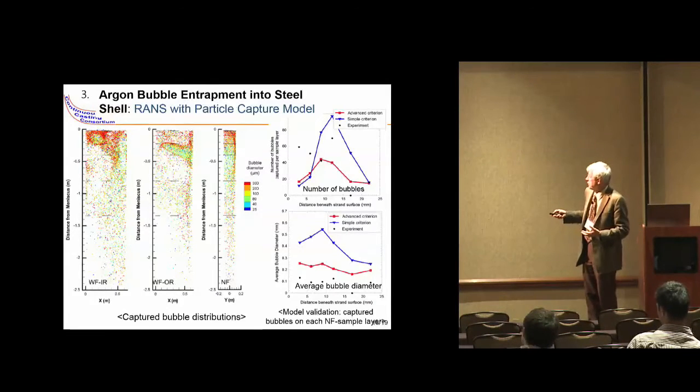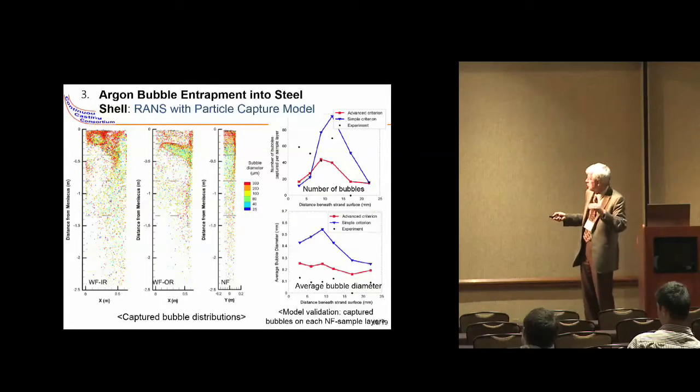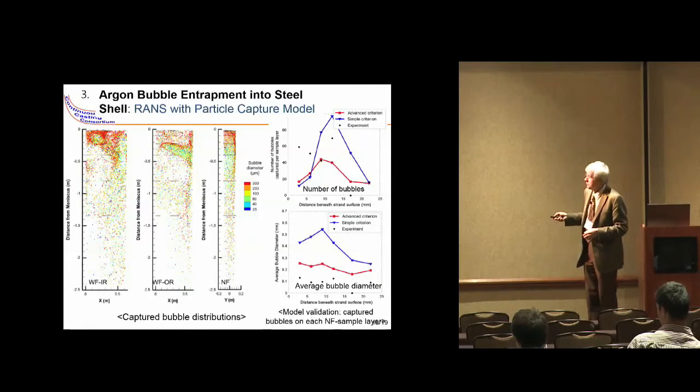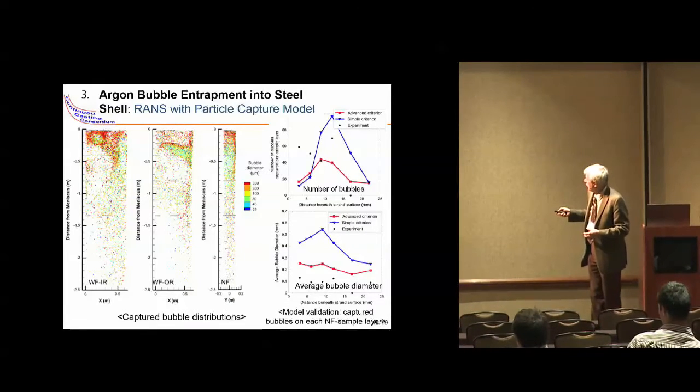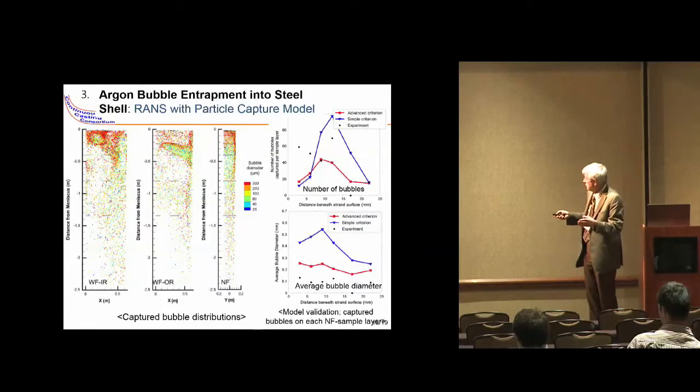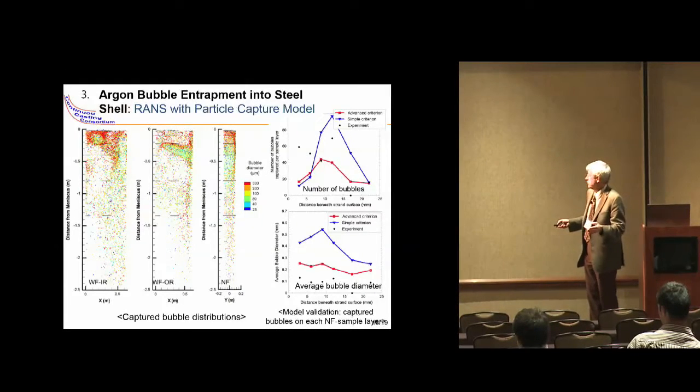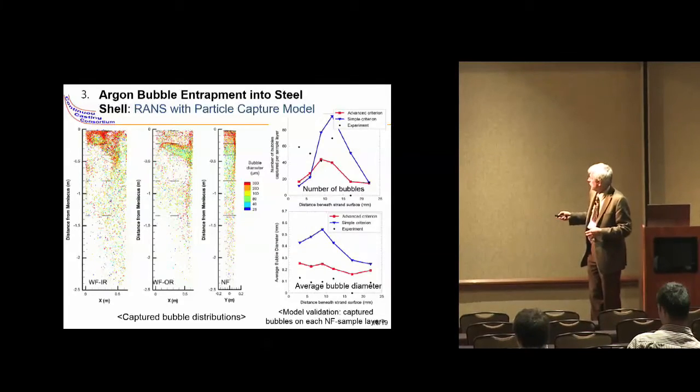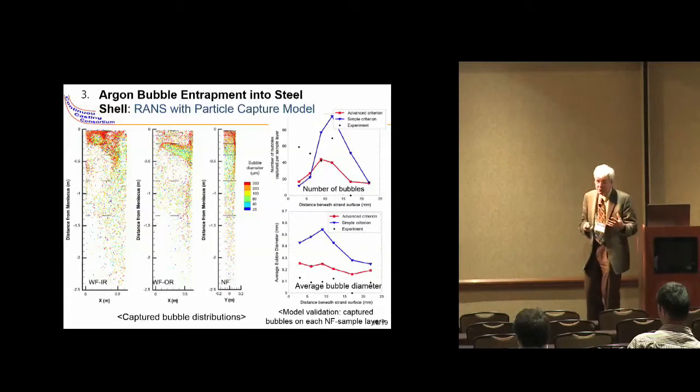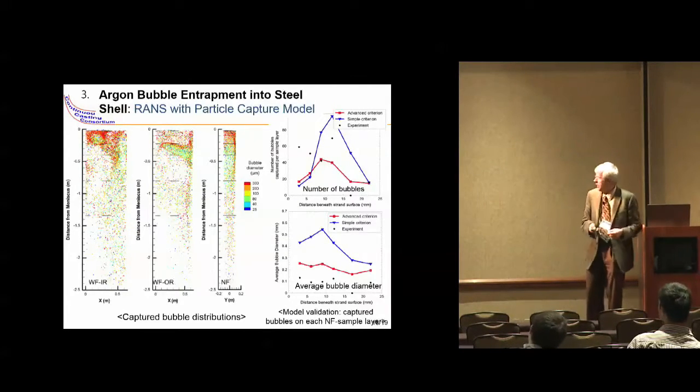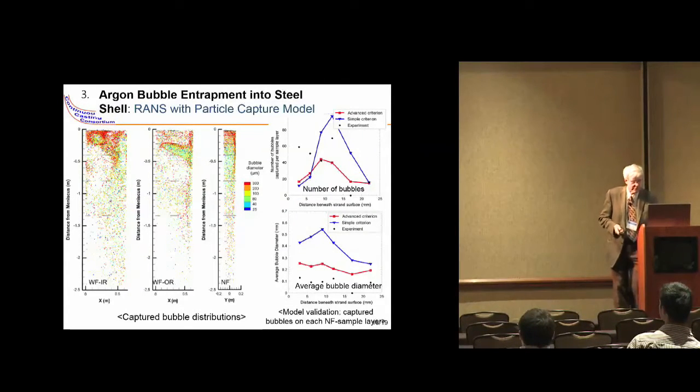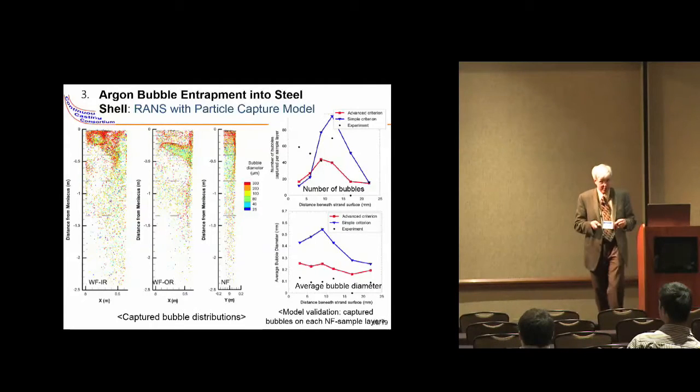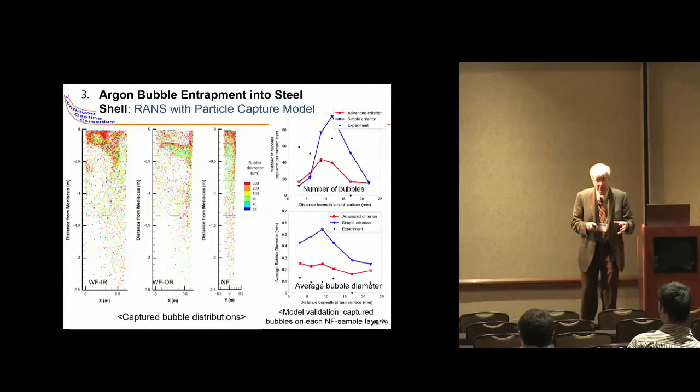We also have a simulation of where the particles are ending up—a map of how particles are moving by different size. Then we made measurements in a slab at one of our sponsors. They've got these points for the number of bubbles as a function of distance beneath the strand and the size of those bubbles. Our prediction with our advanced capture criterion actually matches qualitatively with the measurements. This is still not perfect, so we'd like to do more, but it's very encouraging that we're able to estimate how particles get trapped in a real caster.